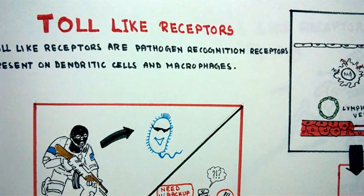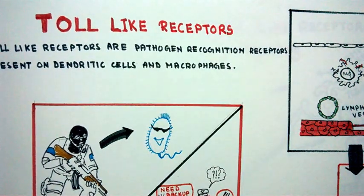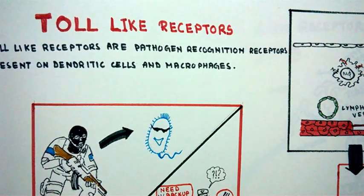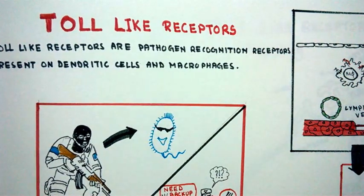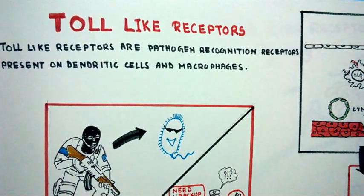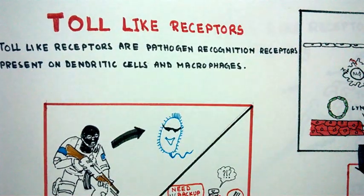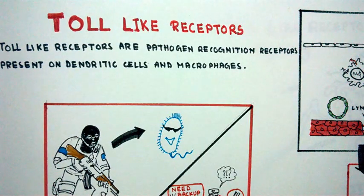Toll-like receptors are pathogen recognition receptors. They detect pathogen-associated molecular patterns, or PAMPs. A PAMP could be a portion of the bacterial flagella or a portion of the bacterial membrane, the lipoproteins, or even the bacterial genome or the viral genome.